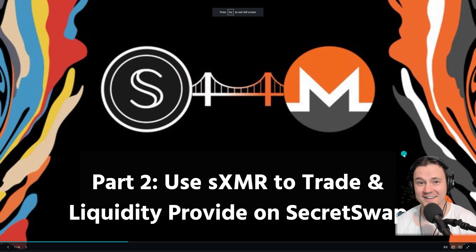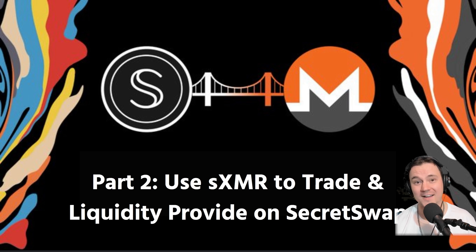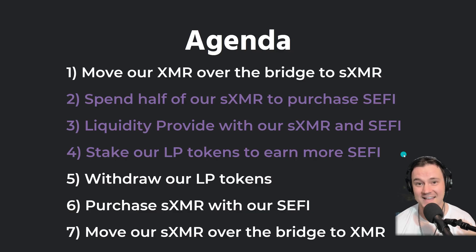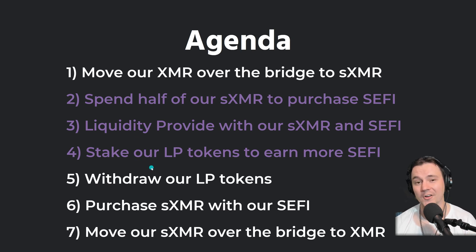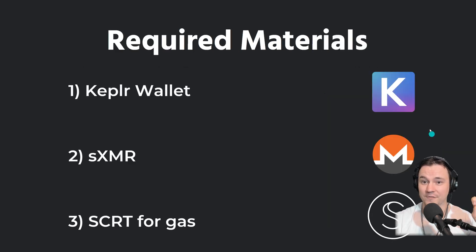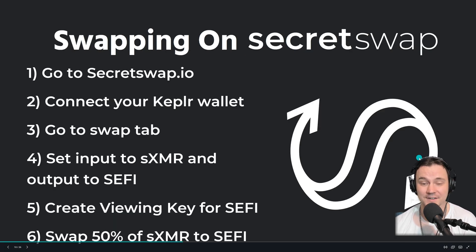Welcome to part two of the Secret Code Podcast's four-part tutorial series on the Secret Monero Bridge. In part one, we brought our XMR tokens across the bridge to get SXMR. Now in this video, we're going to spend half of our SXMR to purchase SEFI, liquidity provide SEFI and Secret Monero, and put those LP tokens in an earn contract to earn even more SEFI — that's called incentivized liquidity provision. You'll need your Keplr wallet Chrome extension with some Secret for gas, as well as the SXMR token from the last video.